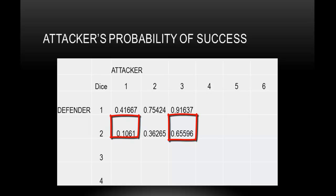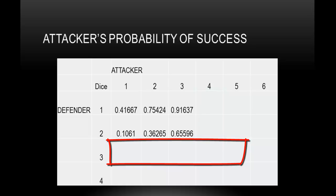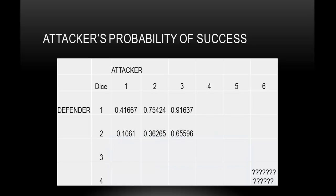What I want to do is complete the table — the 4th column for the attacker to have 4 dice and the defender to have 3 dice. I want to complete that row and column, and I want to work up to completing the 6 on 4 probability. Keep in mind that this probability table is the probability for someone to eventually win or lose — the attacker can't stop in the middle of the battle. It's all or nothing.